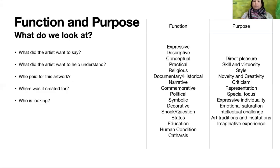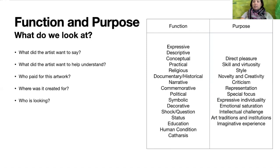So, function and purpose — what are we looking at? What did the artist want to say? What did the artist want to help us understand? Who paid for the artwork? Where was it created for? And who is looking? Remember, you can't necessarily answer all of these questions, but you can answer some of them. It helps us fill in the blanks for the story of the artwork. Some things we might look at for function and purpose are listed in the table on the side of the slide.